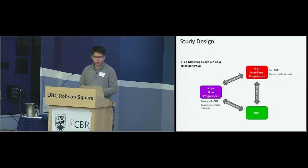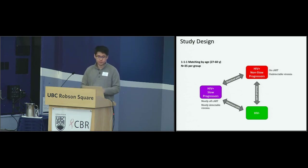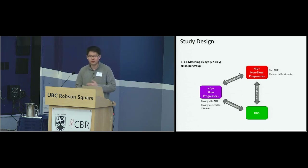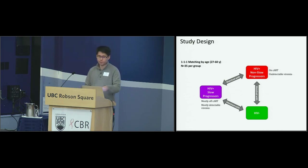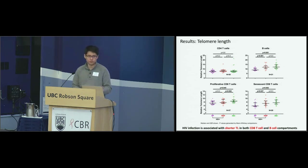The non-slow progressors are all on CART and have undetectable viremia, meaning drug treatment is working. The slow progressors are mostly off CART — they naturally control viremia and are mostly detectable, though not in the millions of copies of viral RNA. We compare them with the HIV-negative group. Looking at telomere length, the CD4 compartment shows no difference between the three groups. In the other three cell subsets, there's a progressive pattern, allowing us to look at two comparisons: HIV negative versus HIV positive, and within the positive group, slow progressors versus non-slow progressors.